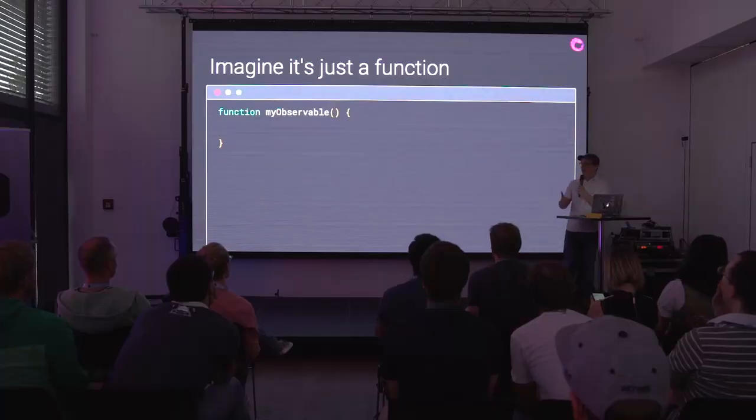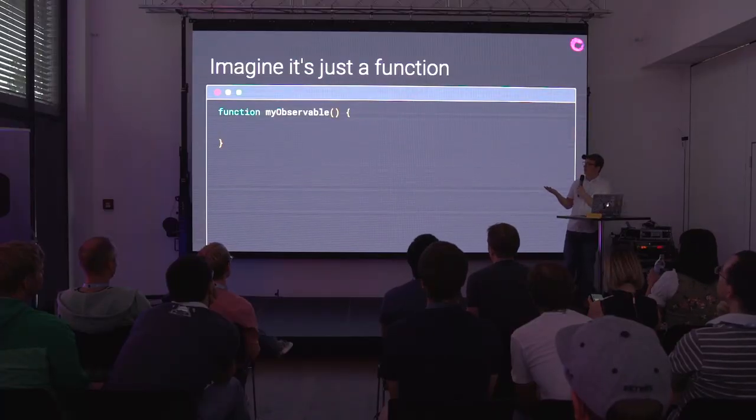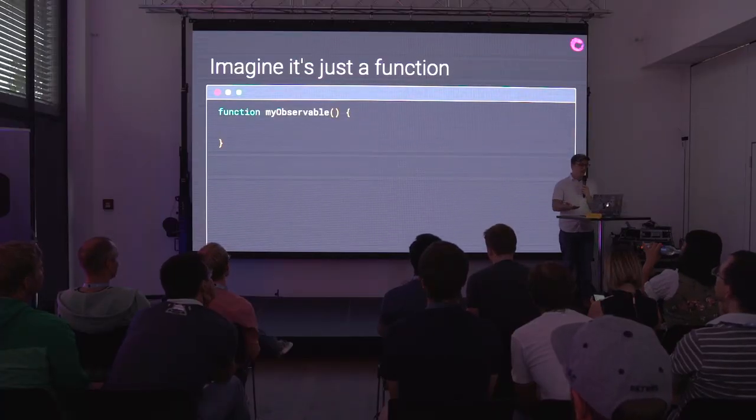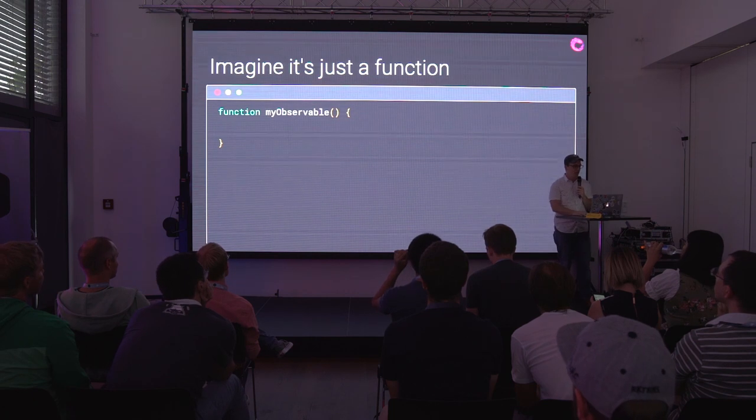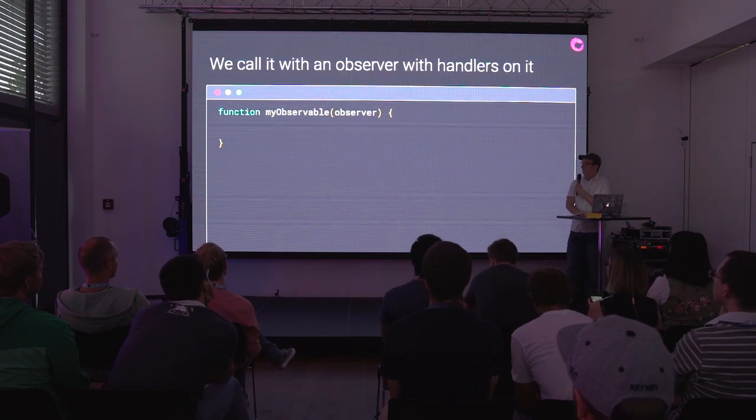Observables are really just functions. We're going to build up what an observable is right here. Imagine we had a function called myObservable, and to that function I'm going to pass an observer. This observer is just an object that has a method on it like next. If I call next with a value — in this case a one — it's going to send the one out of the observable.